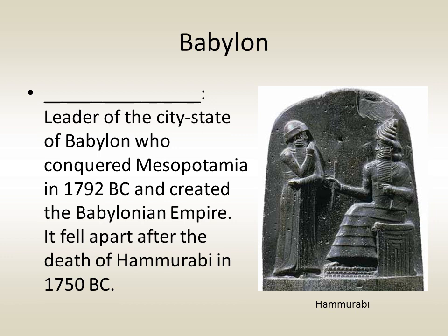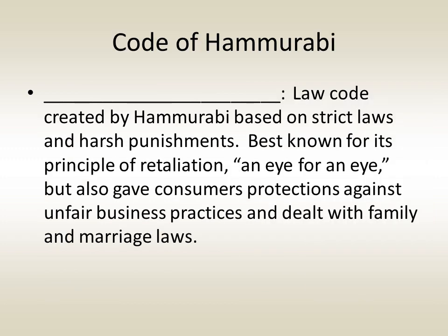Eventually the Akkadian Empire collapsed and was replaced by one led by the city of Babylon. A man named Hammurabi conquered most of Mesopotamia in 1792 BC and created the Babylonian Empire. The empire fell apart shortly after Hammurabi's death in 1750 BC. His major contribution to history is the Code of Hammurabi — a law code based on strict laws and harsh punishments, best known for the principle of an eye for an eye, but also covering consumer protections and family and marriage laws.